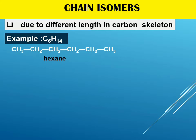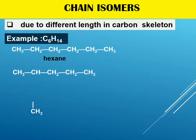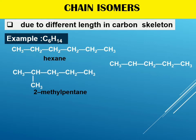To draw chain isomers for C6H14, we can change the length of the carbon chain. Drawing a 5-carbon chain with one carbon as a branch, I can put the alkyl group on the second carbon as a branch — that is 2-methylpentane. Or I can put the alkyl group on the third carbon as a branch, which becomes 3-methylpentane.